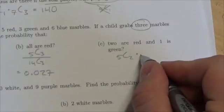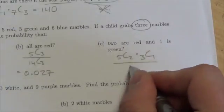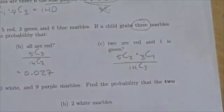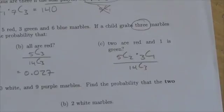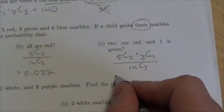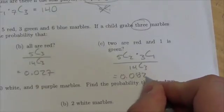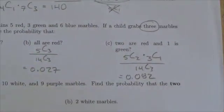...and one is green, it's going to be three choose one over fourteen choose three. Now I just got to go back to my calculator and make a quick change here because I wrote that wrong. I did that as if those colors were reversed there. So that should be five choose two, and three choose one. And when we enter that in we're going to get 0.082 or roughly 8.2 percent.